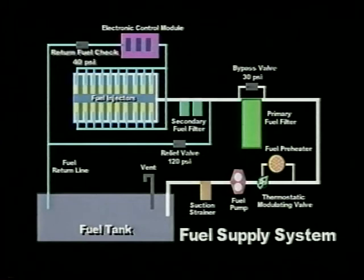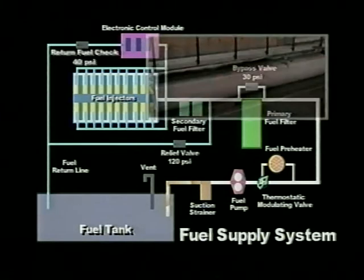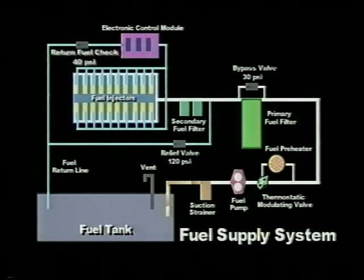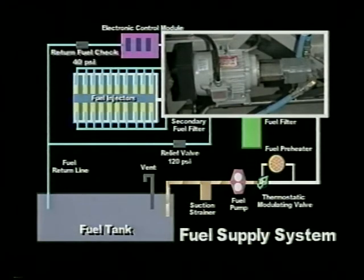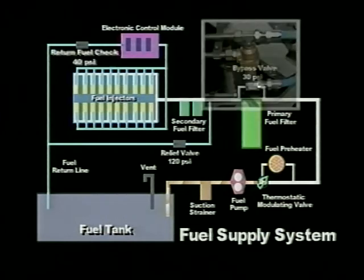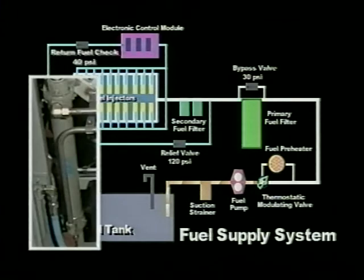The fuel flow through the system is similar to the previous mechanical system, but there are some differences. From the fuel tank, fuel is pulled through a suction strainer to the fuel pump. The fuel pump is now driven by an AC motor to eliminate brush maintenance, and is normally rated for 6.5 gallons per minute. MDEC systems are equipped with a thermostatic modulating valve set at 98 degrees Fahrenheit, and a fuel preheater to ensure proper fuel flow through the system.